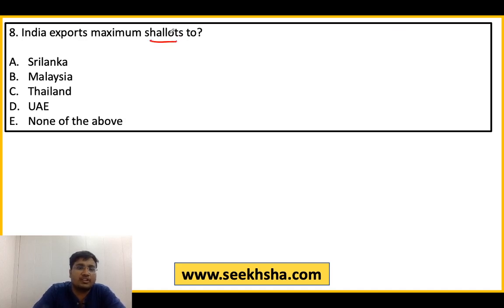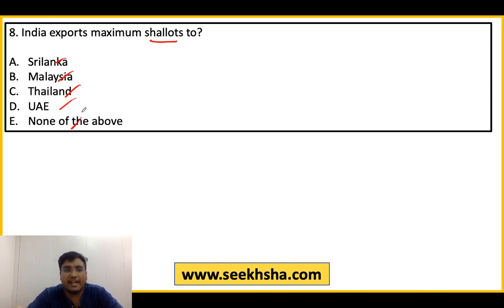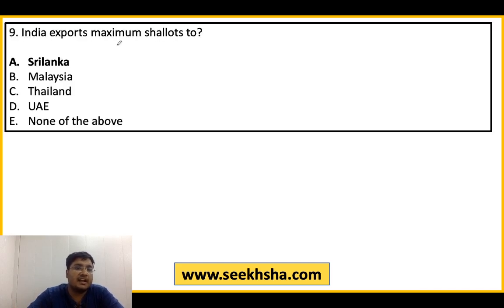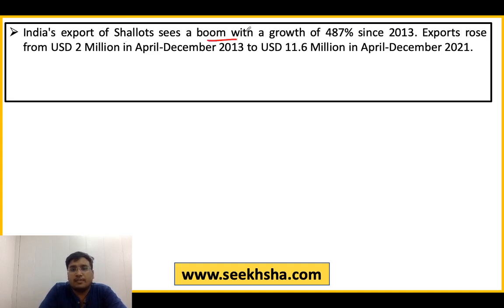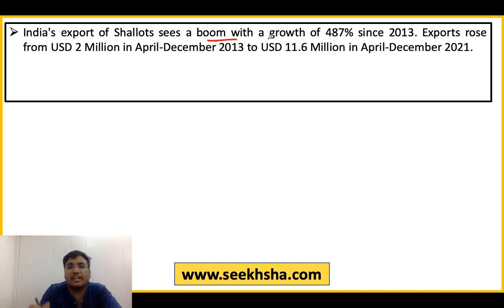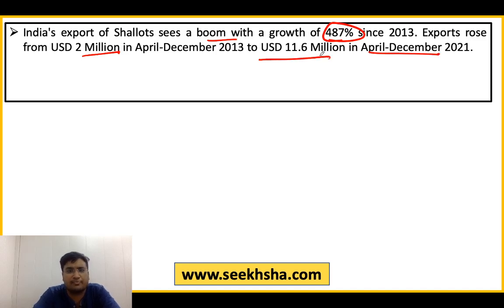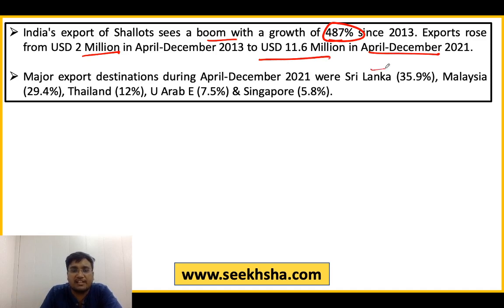Next question: India maximum shallots किसको export करता है? Options: A. Sri Lanka, B. Malaysia, C. Thailand, D. UAE, E. None of the above. The right answer is Option A: Sri Lanka — इंडिया सबसे ज़्यादा shallots श्रीलंका को export करता है। यह news में था क्योंकि 2013 से अब तक shallots export में 487% का increase आया है — 2013 में ~2 million USD से बढ़कर April–December 2021 में 11.6 million USD। Major destinations: Sri Lanka 35.9%, Malaysia 2nd, Thailand 3rd, UAE 4th, Singapore 5th।